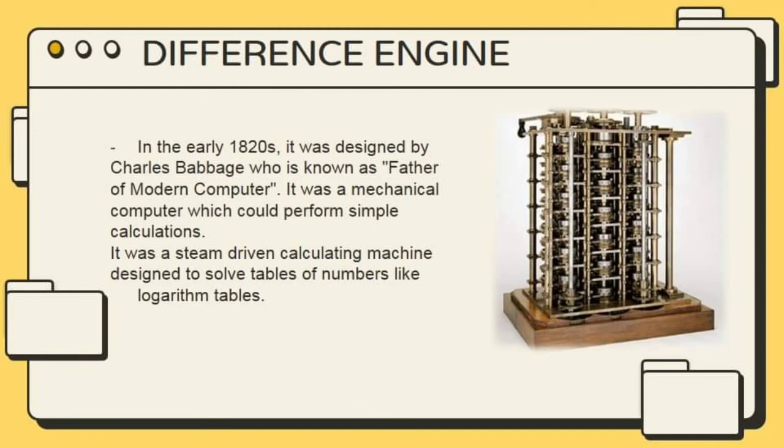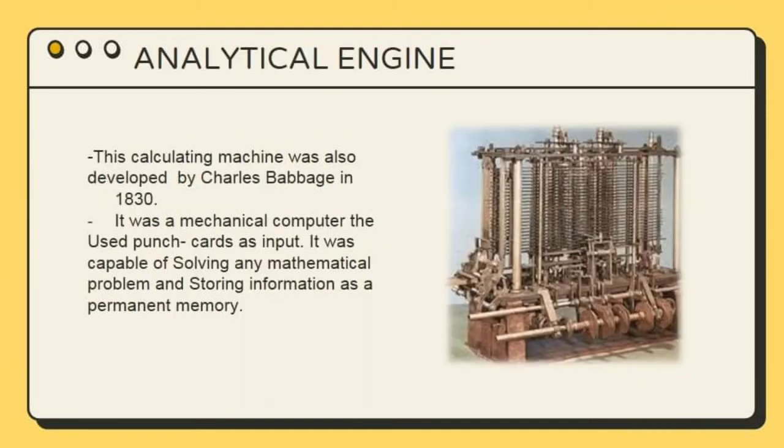The next one is the Difference Engine. In the early 1820s, it was designed by Charles Babbage, who is known as the father of the modern computer. It was a mechanical computer which could perform simple calculations. It was a steam-driven calculating machine designed to solve tables of numbers, like logarithm tables.